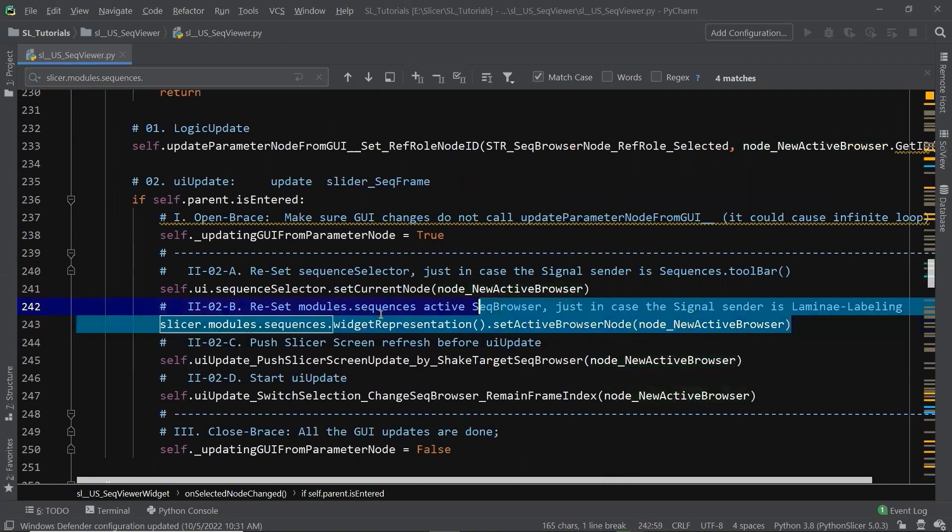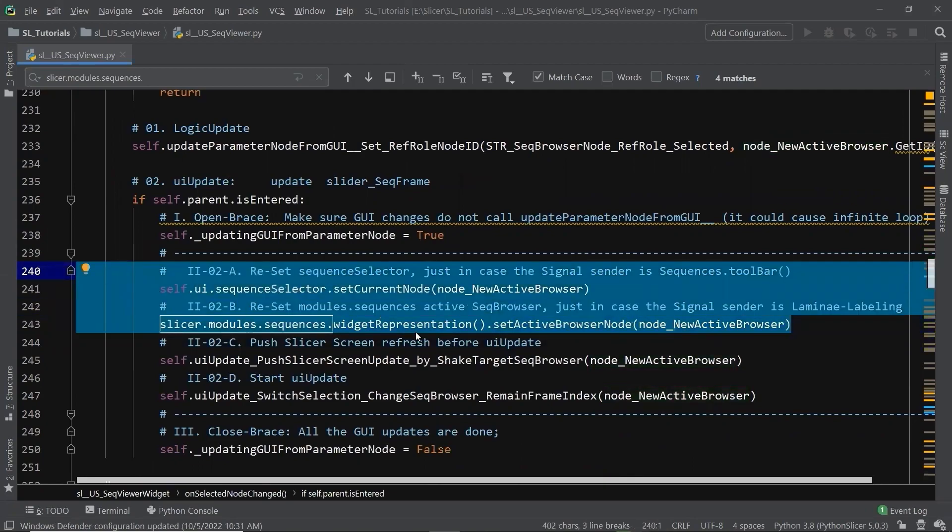because after the second time update, there's not any change in the active Sequence Browser node, thus no infinite loops. In the meanwhile, the two Sequence Viewers can be synchronized at a low cost. Let's go back to 3D slicer, and restart.